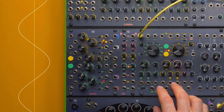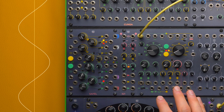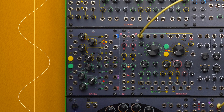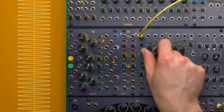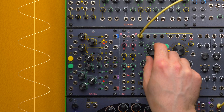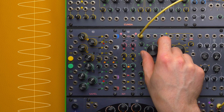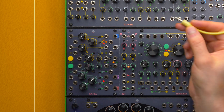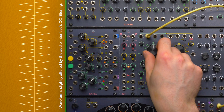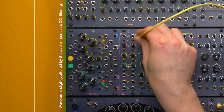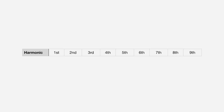The funny thing about electronic waveforms is that the purer they are, the less exciting they sound. The sine wave is the purest waveform with only one harmonic — so pure that it doesn't even exist in nature. Slightly richer is the triangle wave, which in its mathematical abstraction only contains the odd harmonics: the fundamental, the third harmonic, the fifth and so on.